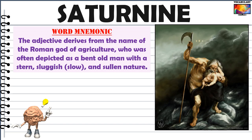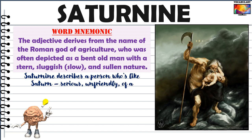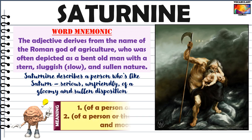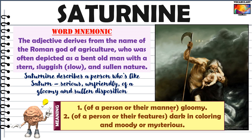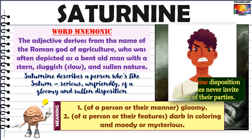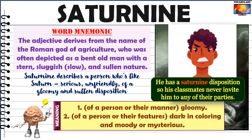You can yourself imagine the kind of personality equated to that of Saturn. The adjective saturnine describes a person who is like Saturn — serious, unfriendly, of a gloomy and sullen disposition. It is often used in phrases such as saturnine disposition or saturnine temperament. According to the Oxford dictionary, saturnine describes a person who is very gloomy, bad-tempered, and sulky. For example: he has a saturnine disposition, so his classmates never invite him to any of their parties. Sometimes saturnine can also describe someone's facial features or complexion when dark or mysterious.